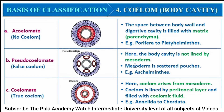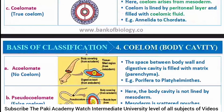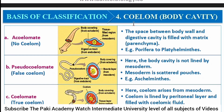Pseudocoelomate, also called false coelom, is where the body cavity is not lined by mesoderm — instead, mesoderm is scattered as pouches, as seen in this diagram. In coelomates, the coelom arises from mesoderm, is lined by a peritoneal layer, and is filled with coelomic fluid. Annelids and Chordates come under this example. In the coelomate, the coelom is lined by the peritoneal layer, as clearly shown in this diagram.